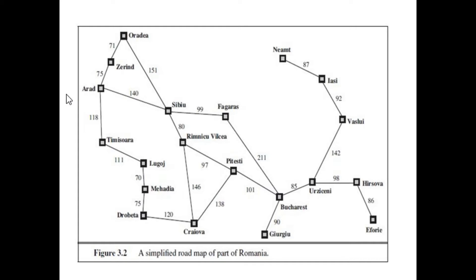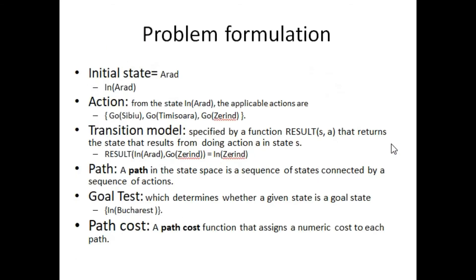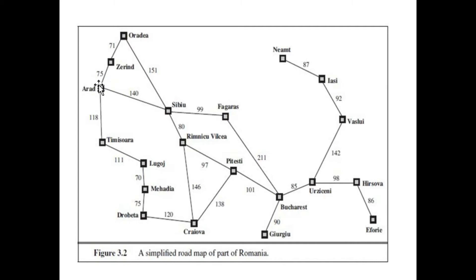This is how we formulate the problem. We can represent our problem as a tree, which we will discuss shortly. The initial state is Arad. Look at this position on the map — we can move towards the city Zerind, we can move towards the city Timisoara, and we can move from Arad to Sibiu. So there are three different actions for our initial state.